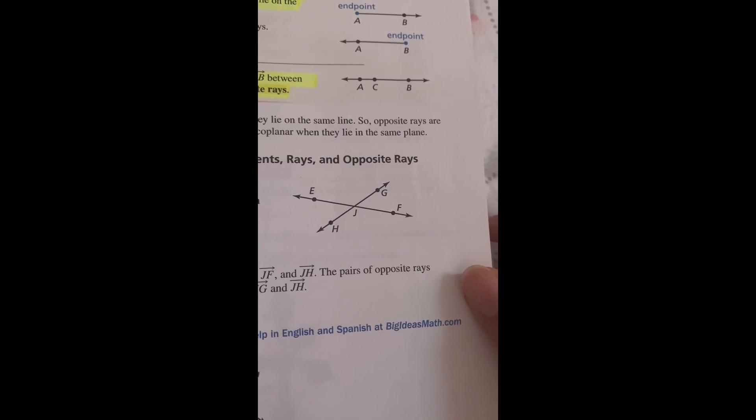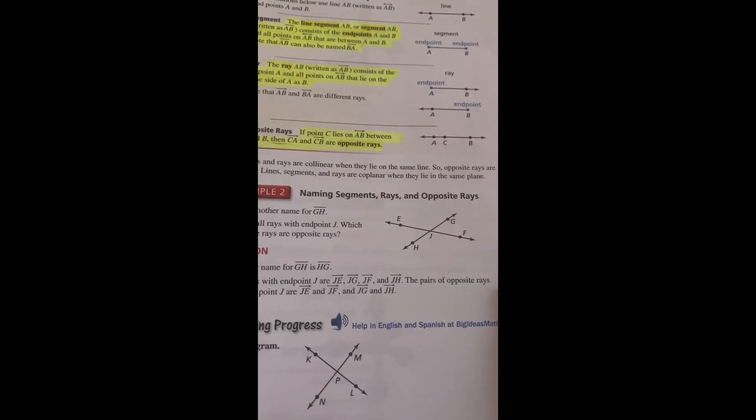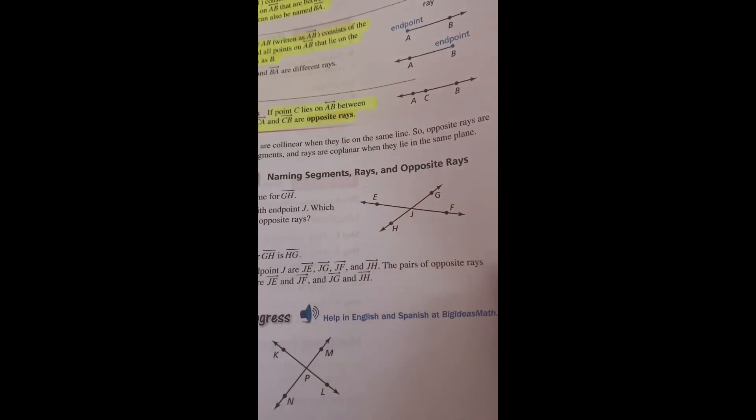So they are not collinear, so they have opposite rays, so they are not opposite rays.